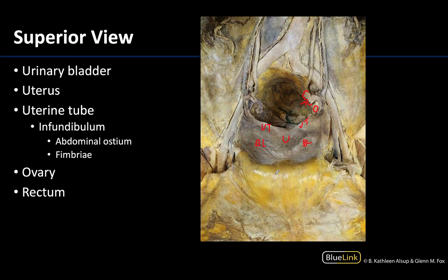The bladder is always going to be anterior and is usually difficult to see in a superior view as it is covered by quite a bit of peritoneum, sometimes with a little bit of fat associated with it, but it's going to be deep to this general area right here. The rectum will be posterior — you can see a bit of it here, it's been tied off in this dissection — but generally without anything removed the broad ligament is going to be fairly dominant in this view.